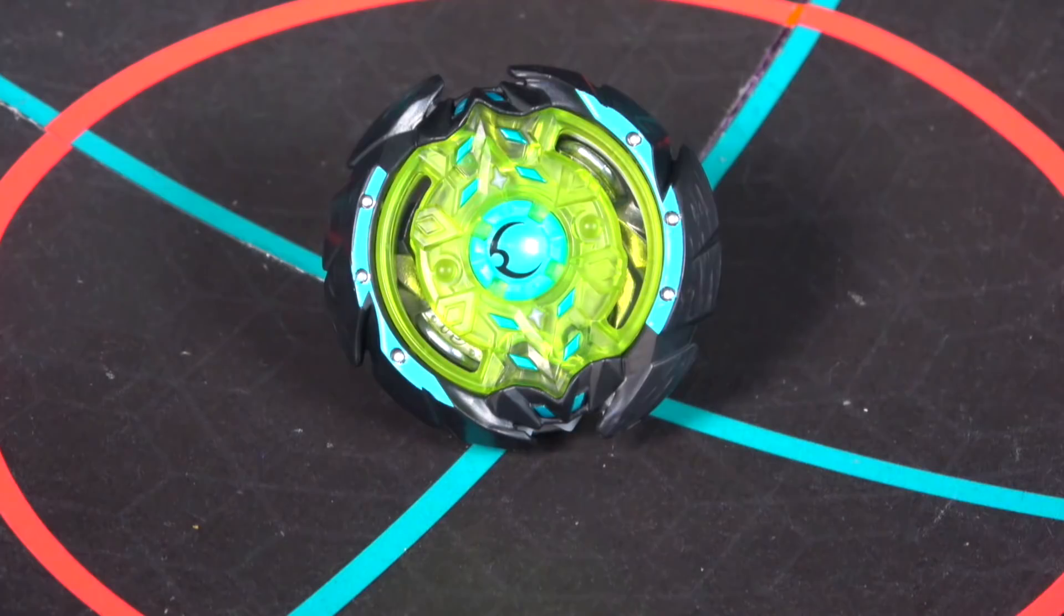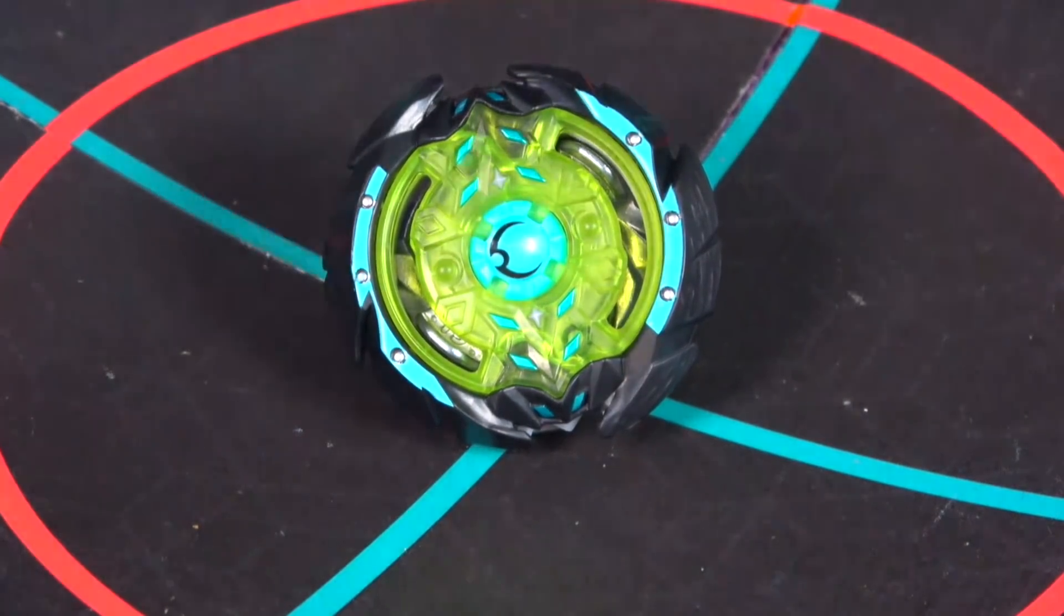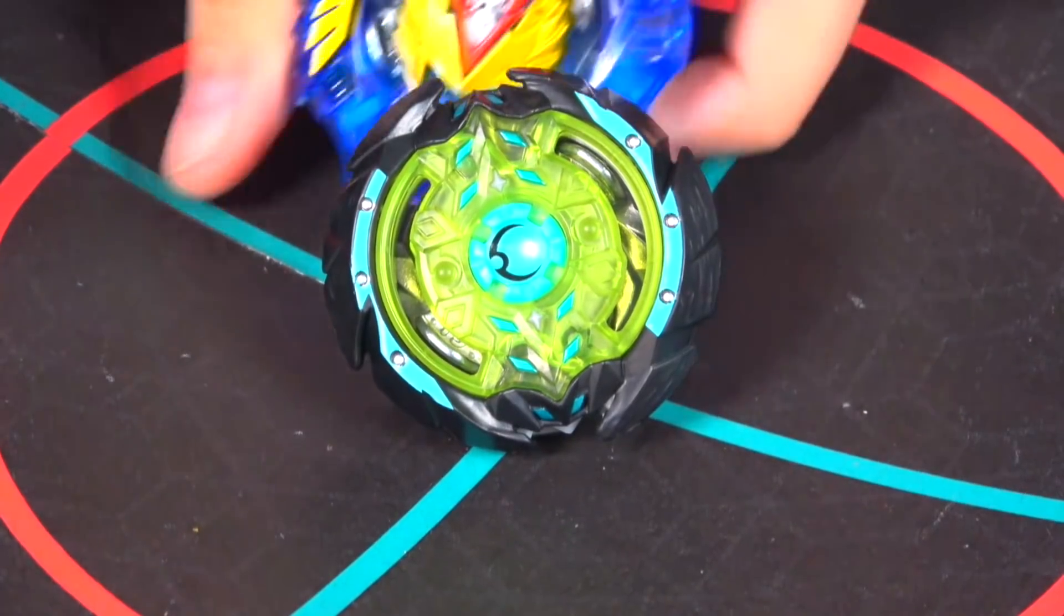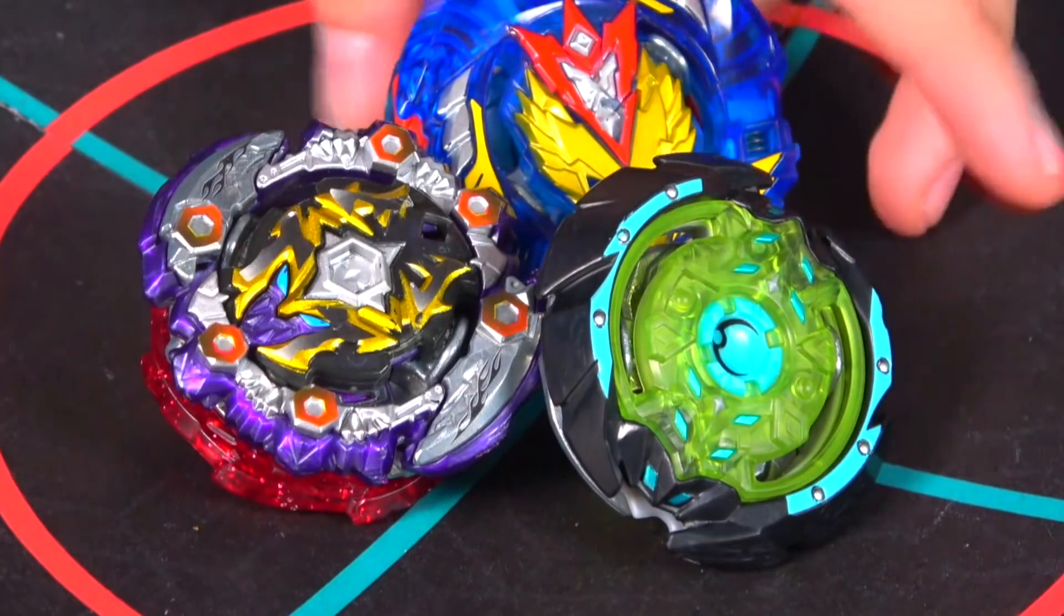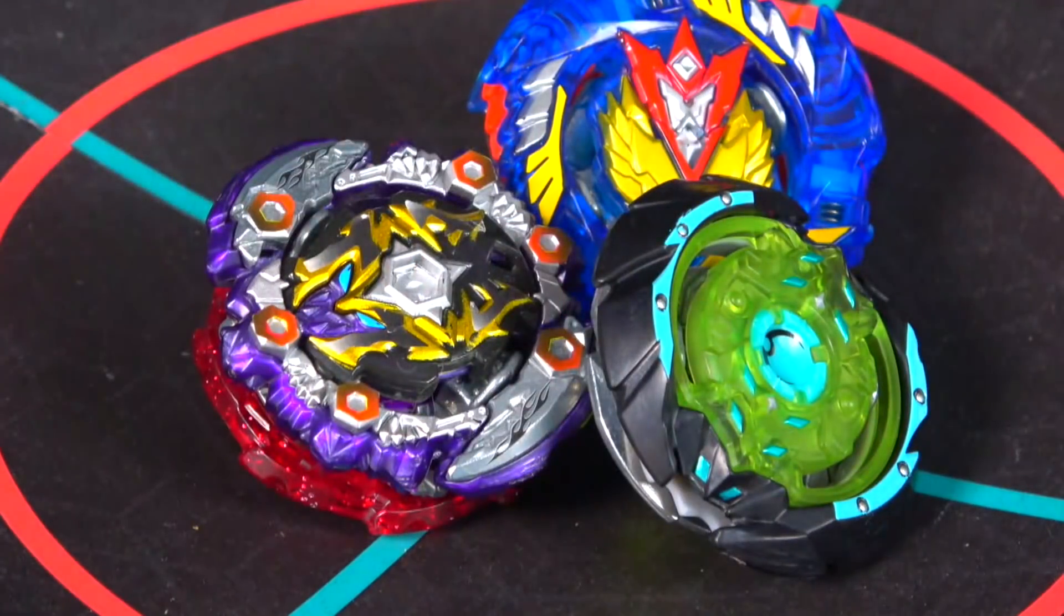Hello everyone! So today, 400 likes is our like goal because we're gonna be doing KNOX, Dread Hades, and this Hades has stickers on, don't worry about that, and Turbo Valtryek to see which out of these latest Switchstrike beys is the best!